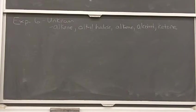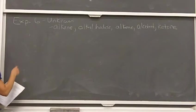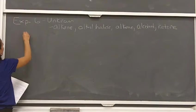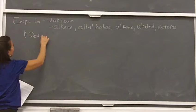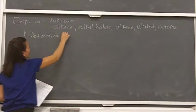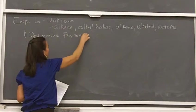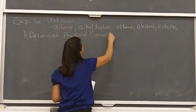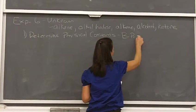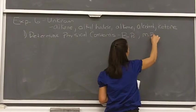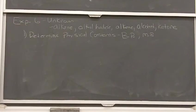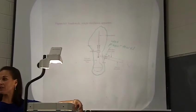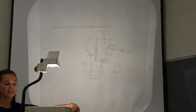We need to figure out what's in the unknown through a series of steps, starting with determining physical constants. Depending on whether the unknown is a liquid or a solid, we need to figure out its boiling point or melting point. You should all be good at melting points now, but boiling point we haven't characterized something by yet. We've observed boiling point in a simple distillation, but haven't actually characterized something by its boiling point.